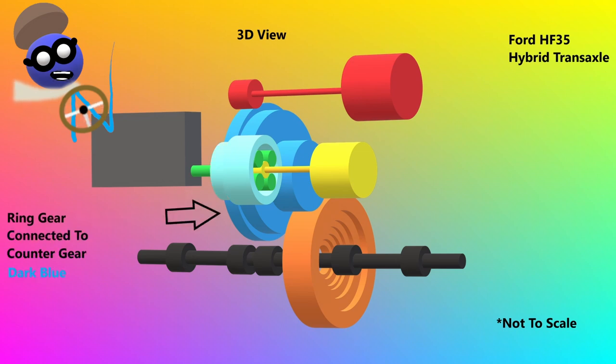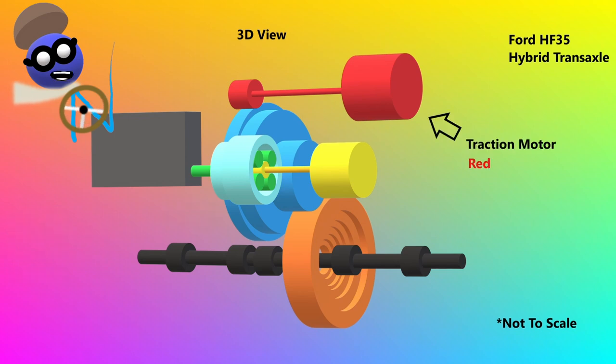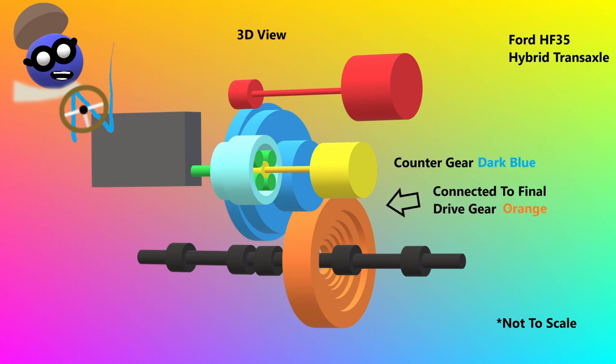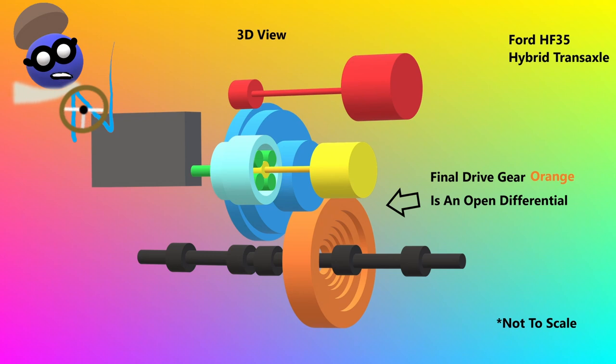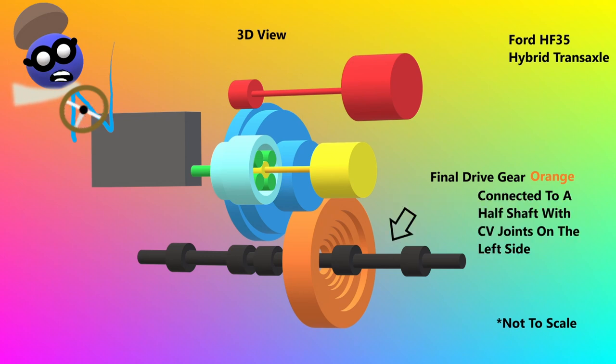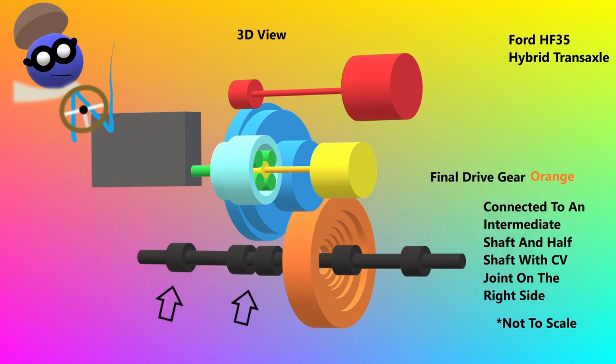The ring gear is connected to the counter gear shown in dark blue. The main traction motor shown in red provides motive power in forward or reverse and is also connected to the counter gear. The counter gear is connected to the orange final drive gear. The final drive gear is an open differential connected to a half shaft with CV joints on the left side and connected to an intermediate shaft and half shaft with CV joints on the right side.